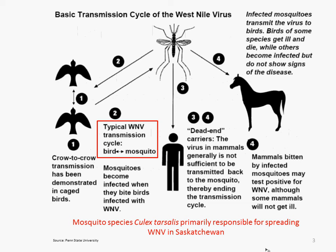West Nile is a virus picked up by mosquitoes. This particular mosquito, Culex tarsalis, is a prairie mosquito that has a particularly pronounced role in spreading it — it seems to be the dominant one, at least locally. This mosquito, as mosquitoes do, can bite many sorts of organisms, somewhat promiscuously.